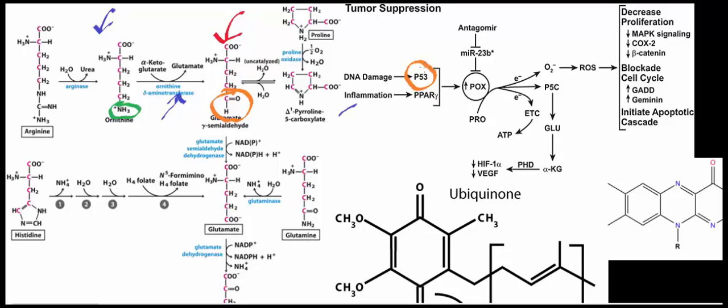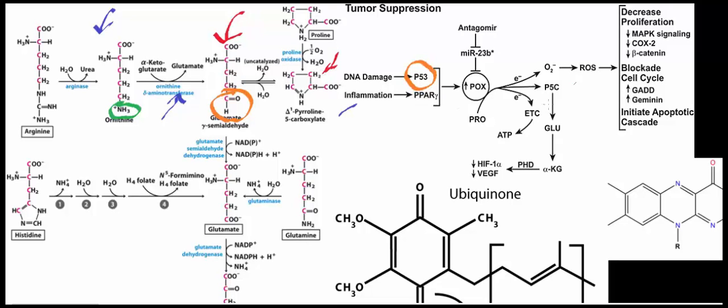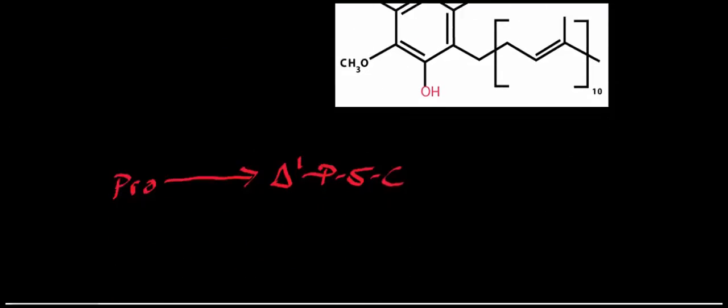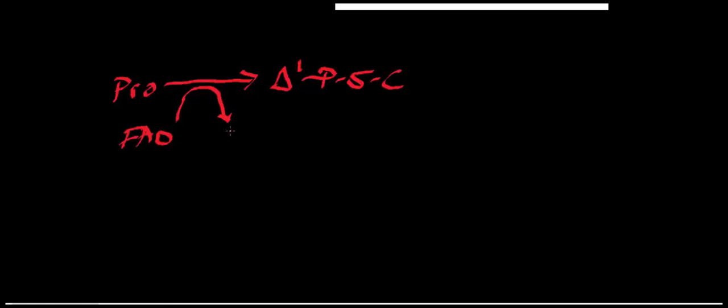There's a general cycle for proline oxidase — a better name for this enzyme is proline dehydrogenase. Some texts call it proline oxidase because one of the terminal electron acceptors in the mechanism can be oxygen, but it doesn't have to be. We have proline, and we can dehydrogenate it into something called delta-1-pyrroline-5-carboxylate. The electrons abstracted when we form the Schiff base go to FAD, so the immediate product, besides delta-1-pyrroline-5-carboxylate, is FADH2.